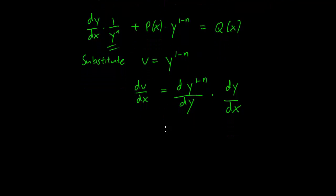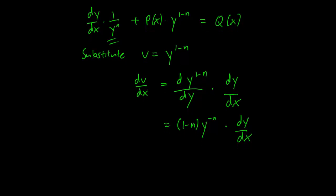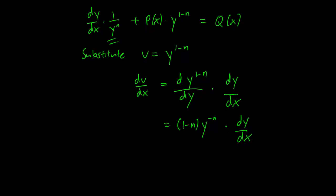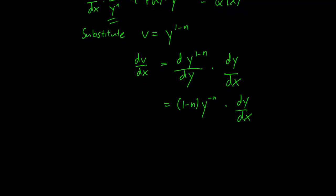So d/dy raised to the 1 minus nth power is going to be 1 minus n times y raised to the minus nth power times dy/dx and this simplifies to...